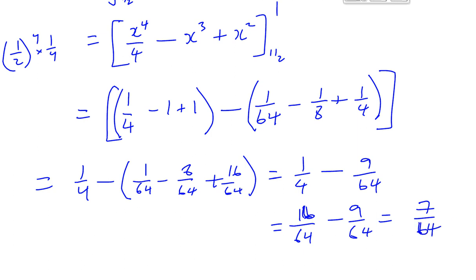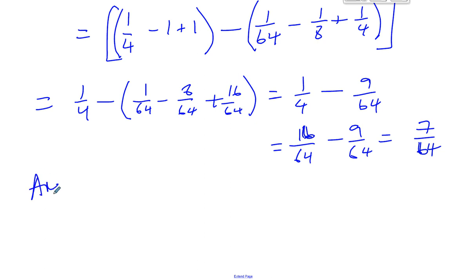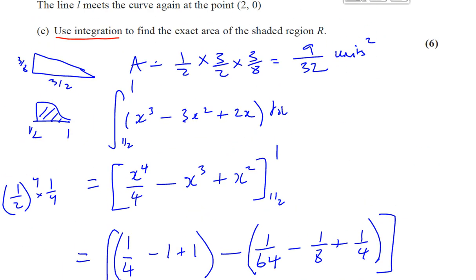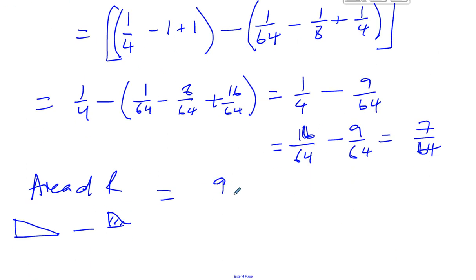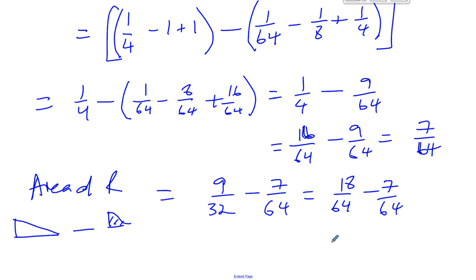So our answer — the area of R — is the area of our triangle minus the area under the curve. The triangle area was 9 over 32, minus the area under the curve which is 7 over 64. Now 9 over 32 is 18 over 64, minus 7 over 64, which gives you 11 over 64 square units. That is our answer.